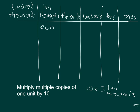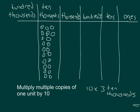The next thing we can do is think about what happens when we multiply 10 times those three. For each of those ten thousands, this one of them is now ten of them — we multiplied by ten. And we'll do the same thing for the other two. So now, instead of three ten thousands, we have ten times three ten thousands, or thirty ten thousands.